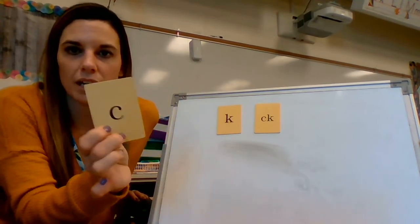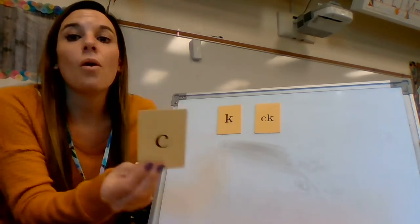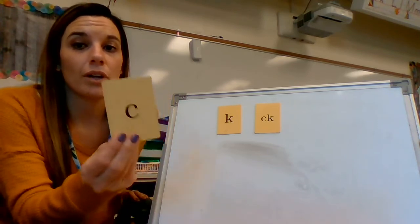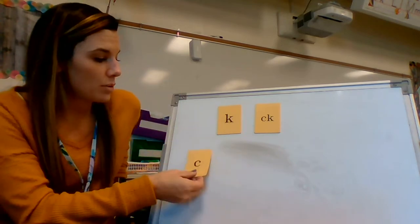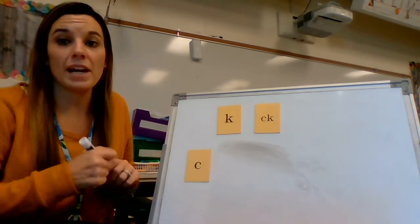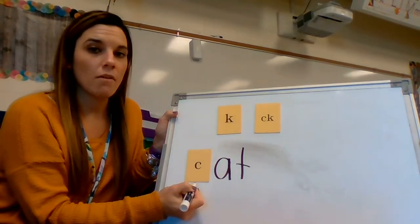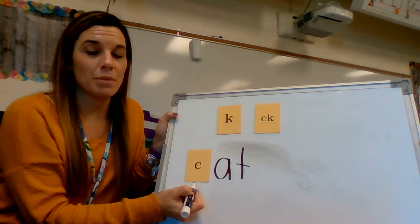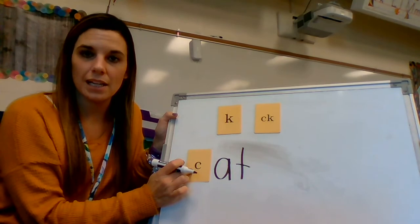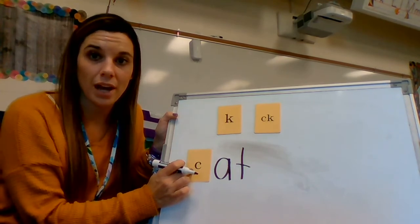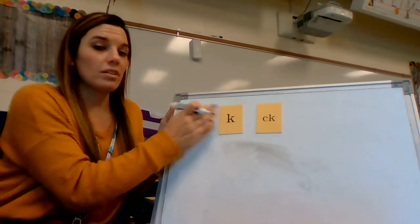Let's talk about the letter C. When the letter C stands all by itself — it doesn't have a buddy letter, it's just the C — it says /k/ only at the beginning of a word. So when you see a word that starts with the letter C, like the word 'cat,' it's going to start with a C because it's at the beginning of the word. Anytime the letter C is at the beginning of the word, it says /k/.